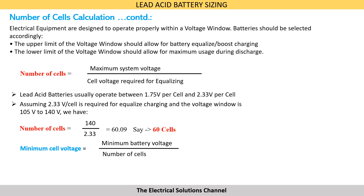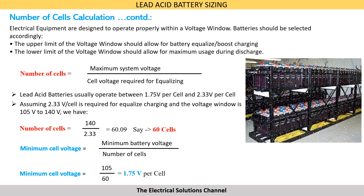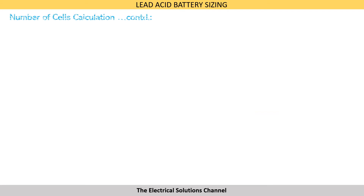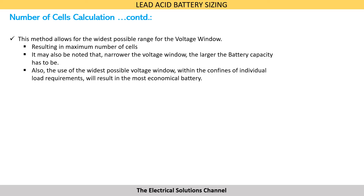Minimum cell voltage can be calculated as minimum battery voltage divided by number of cells. So minimum cell voltage in our case is 105 volts divided by 60 cells, which equals 1.75 volts per cell. The number of cells calculated by this method allows for the widest possible range of the voltage window.